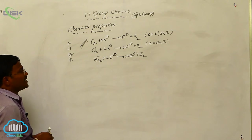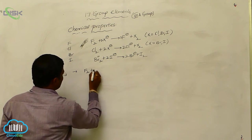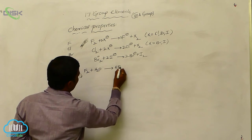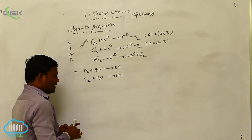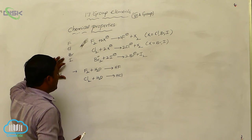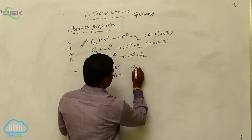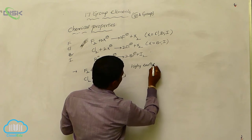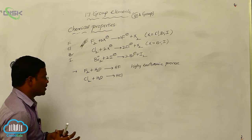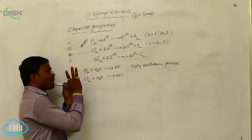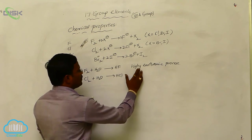This is the oxidizing character exhibited by these elements. They also highly react with water. Fluorine when reacted with water produces hydrogen fluoride. Similarly, chlorine when dissolved in water produces hydrogen chloride. All halogen elements easily react with water, and the reactivity of fluorine with water is a highly exothermic process due to the high reactivity of fluorine — its small atomic size, high electronegativity, and absence of d-orbitals.